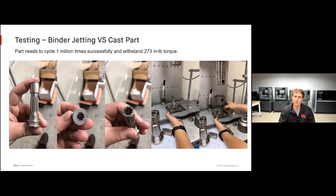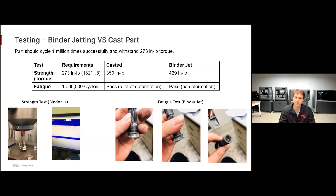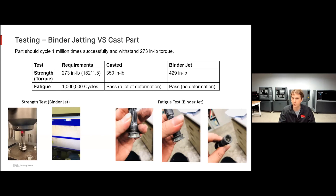A great example here is this binder jetting versus cast component test. This part needed to be cycled one million times and withstand at least 273 inch-pounds of torque. The part was originally being cast, but the customer wanted to know: can I replace this with a printed geometry and get the results I need? The answer was yes. The cast component withstood 350 inch-pounds of torque; the binder jet component printed on the Shop System withstood 429 inch-pounds — exceeding both the cast component and the requirement. On fatigue, it needed to withstand one million cycles. The cast part passed but experienced lots of deformation; the binder jet part passed with very little to no deformation, exceeding the cast component and the part requirements.